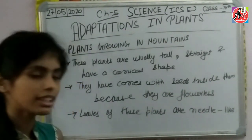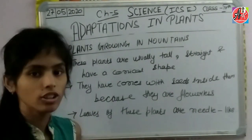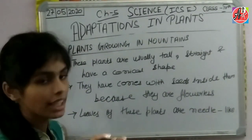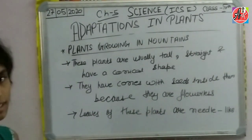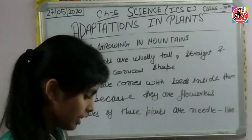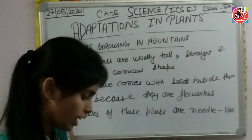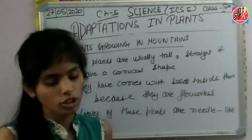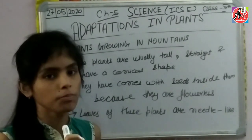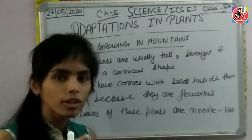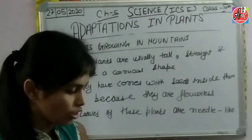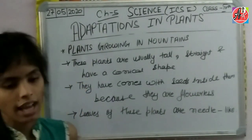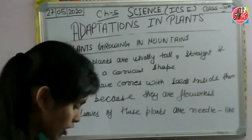The leaves of these plants are needle-like. These needle-like leaves also form a conical shape. The leaves have a waxy coating to prevent any damage from snow. The waxy coating also prevents water loss. Because of their conical shape, snow slides off easily. These trees are called coniferous trees.